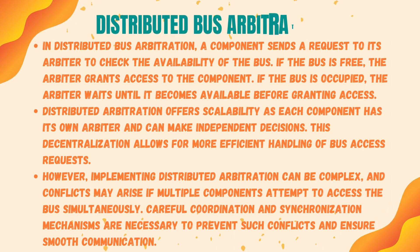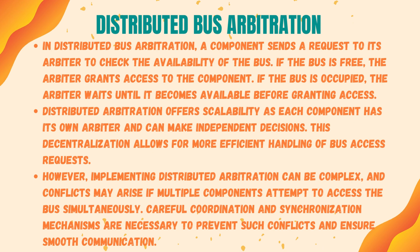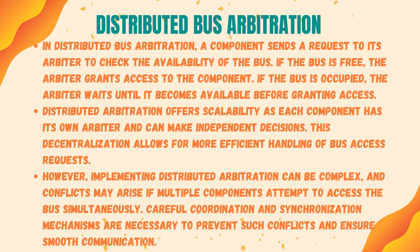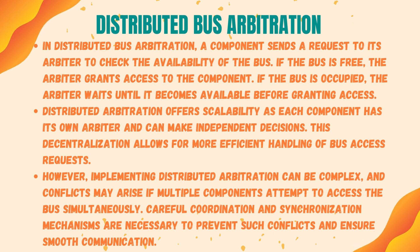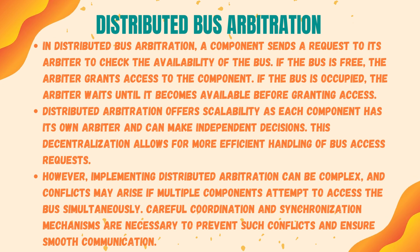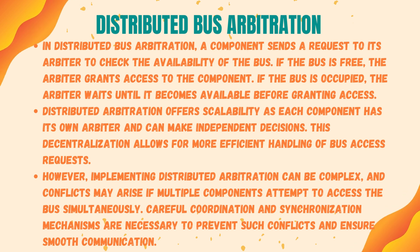In distributed bus arbitration, a component sends a request to its arbiter to check the availability of the bus. If the bus is free, the arbiter grants access; if the bus is occupied, the arbiter waits until it becomes available before granting access. Distributed arbitration offers scalability as each component has its own arbiter and can make independent decisions, allowing for more efficient handling of bus access requests. However, implementing distributed arbitration can be complex, and conflicts may arise if multiple components attempt to access the bus simultaneously, requiring careful coordination and synchronization.